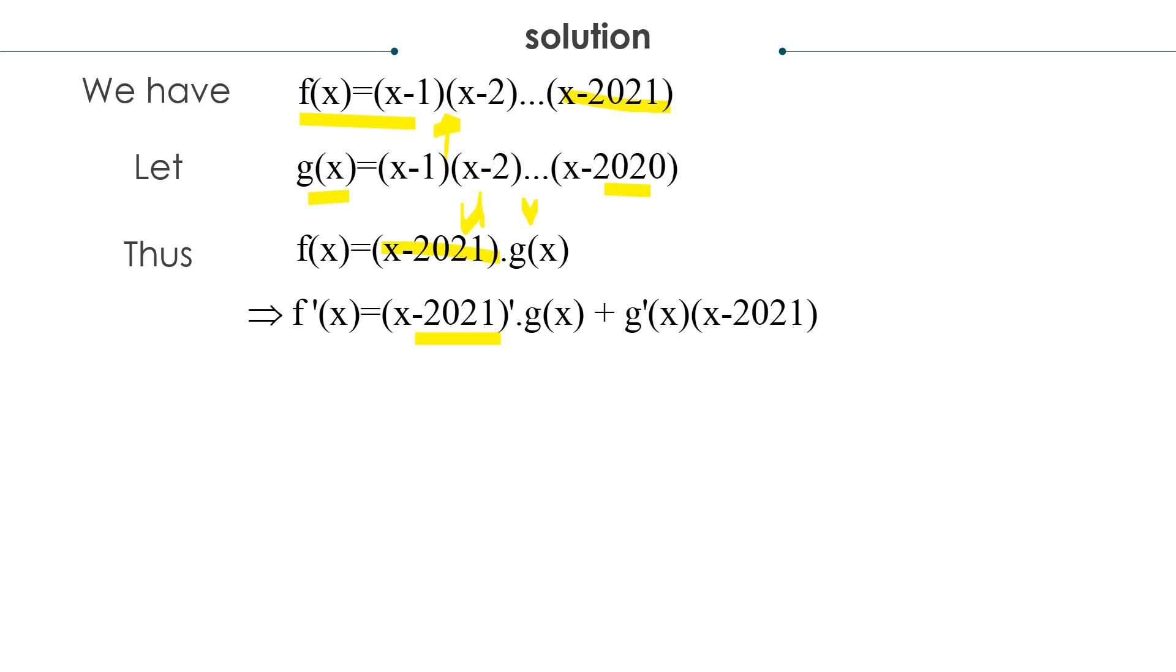This one, g prime, is pretty simple. Since the derivative of (x-2021) is only 1, so 1 times g(x) equals g(x). This one I keep the same, it remains the same.